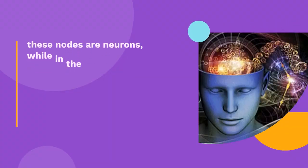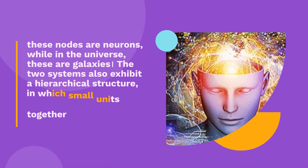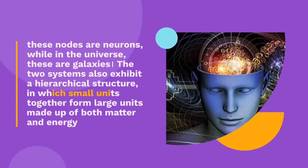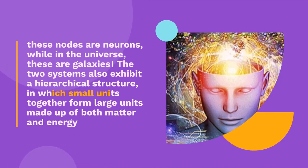In the brain, these nodes are neurons, while in the universe, these are galaxies. Both systems also exhibit a hierarchical structure, in which small units together form larger units.